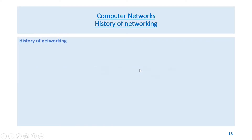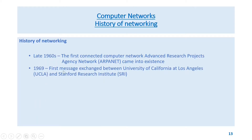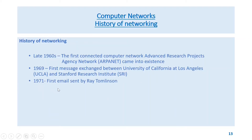History of networking: In the late 1960s, the first connected computer network — ARPANET (Advanced Research Projects Agency Network) — came into existence. In 1969, the first message was exchanged between the University of California at Los Angeles (UCLA) and Stanford Research Institute (SRI). In 1971, the first email was sent by Ray Tomlinson.